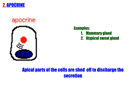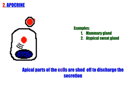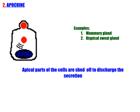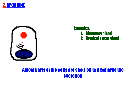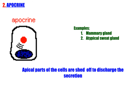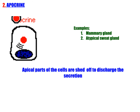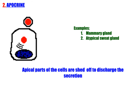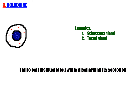Apocrine gland: the apical part of the cells is pinched off to discharge the secretion. A small apical part of the cell is released along with the secretory product. Examples: mammary gland, atypical sweat glands — sweat glands in the axilla, areola and nipple of the breast, ear canal, eyelid, wings of the nostril, and parts of the external genitalia.